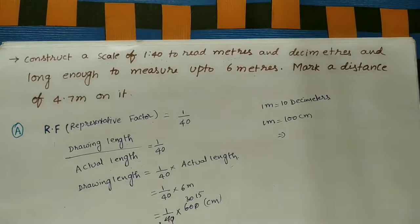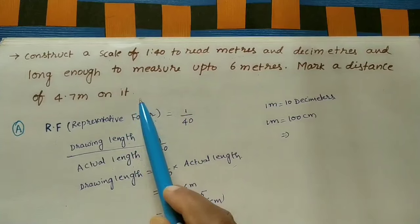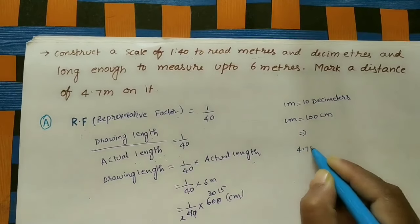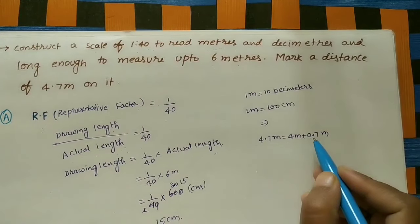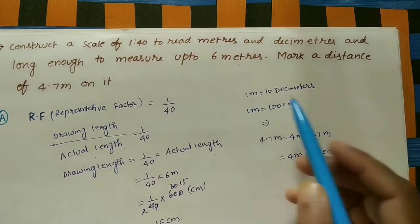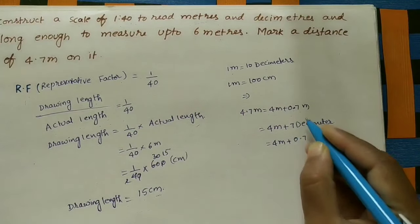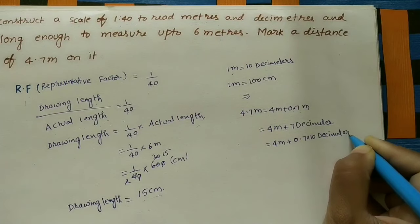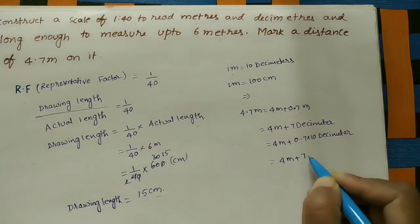The scale should read meters and decimeters. Now mark a distance of 4.7 meters. 4.7 meters means 4 meters plus 0.7 meters. Since 1 meter equals 10 decimeters, 0.7 meters equals 0.7 × 10 = 7 decimeters. So 4.7 meters equals 4 meters and 7 decimeters. We can mark 4 meters directly on the scale.